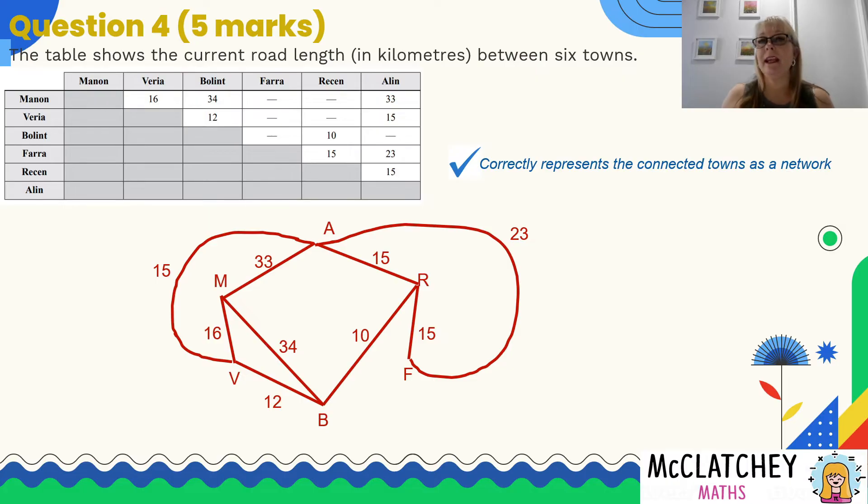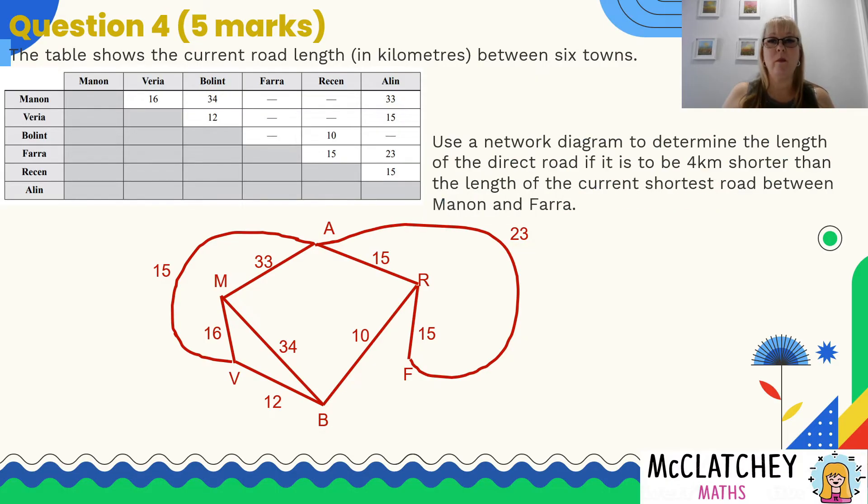Okay, so once I've done that, I'm going to be getting a first mark out of five for correctly representing the connected towns as a network. So I've got a network, and also for putting those links on there as well. That was worth a second mark because remember it is a weighted network. Okay, so now that I've created this network, I'm going back to my question to see what else it wants me to do. It wants to determine the length of a direct road between Manon and Farrah, and that's got to be 4 kilometers shorter than the current possible ways to get there.